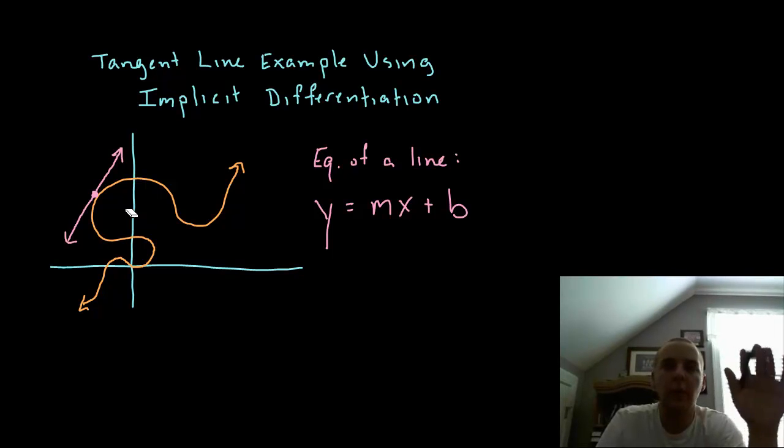In this example we're going to try to find the equation of a tangent line, but the catch is the tangent line is not going to be tangent to a function like it typically is, it's going to be tangent to an equation that's defined implicitly, so that's going to create a little twist here.